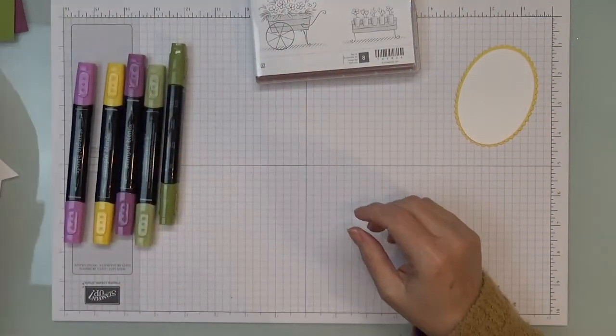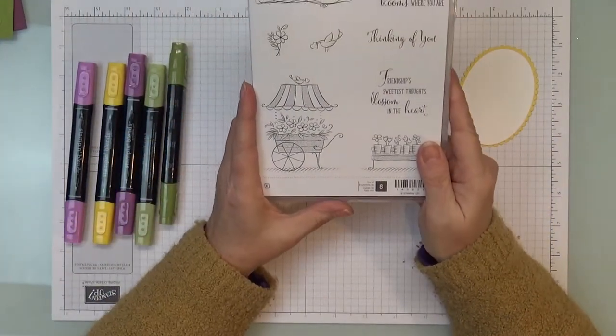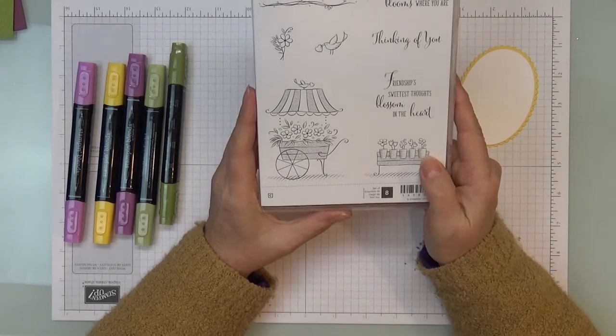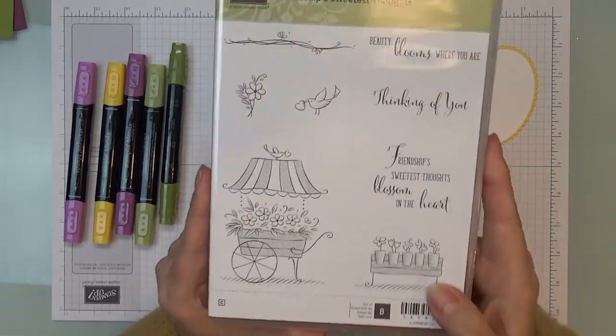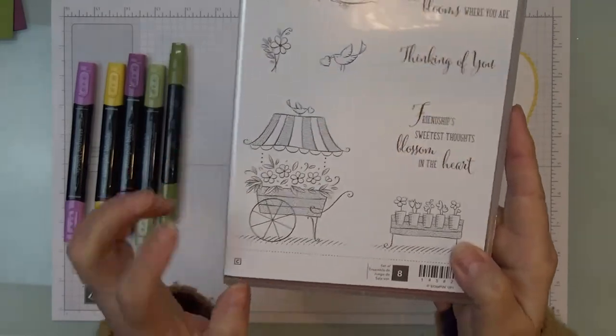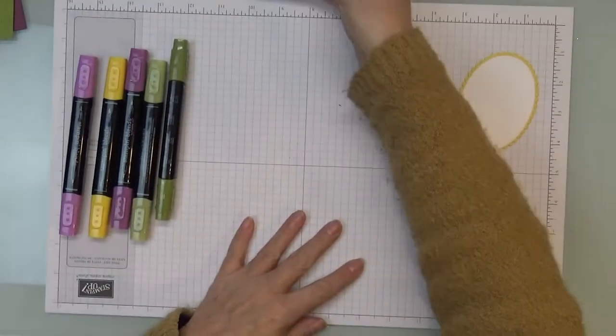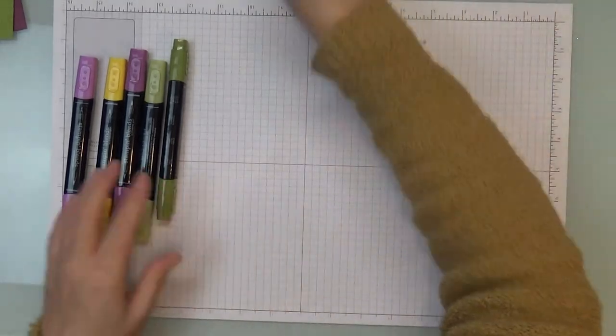And I am using the brand new in the Occasions Catalog Friendships Sweetest Thoughts and I'm in love with the stamp set. It just has some very beautiful sentiments and I just love the images on this stamp set.